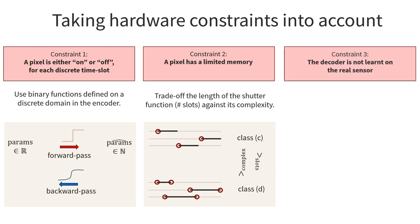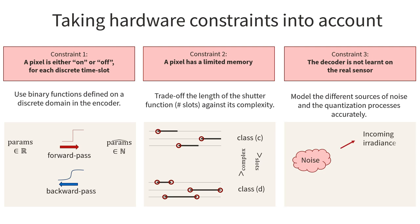Finally, because the decoder is never learned on the real sensor, which would require a more complex closed-loop system, it is crucial to properly model the different sources of noise and quantization processes of the sensor into the decoder. This includes noise on the capture of incoming radiance, the execution of the shutter function, and the storage and handling of quantities.